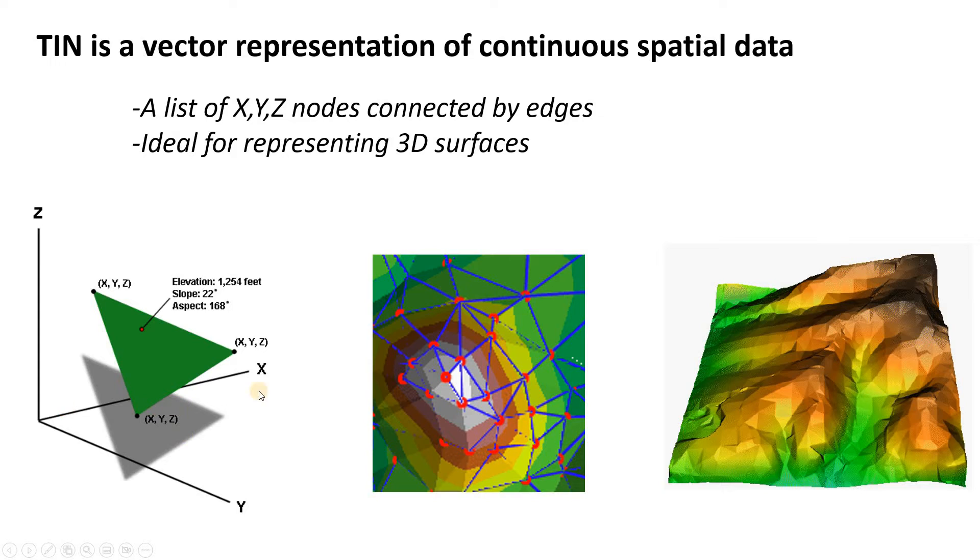So what do I mean by that? Here's our X, here's our Y, those are our Cartesian coordinates, and we also add to that a Z value. That could be elevation. Of course, it could be any continuous value, but we almost always see these used to represent topography, so elevation is usually what Z is.